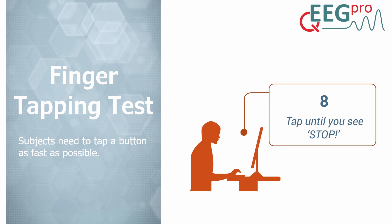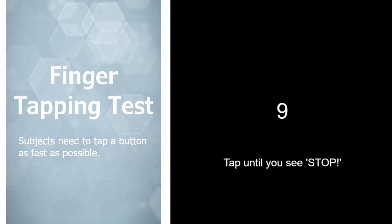The final test is the Finger Tapping Test. This is a very simple test in which subjects are instructed to tap a button as fast as they can with either their left or right hand for 10 seconds. The test consists of seven trials, where trial one is a practice trial. Trials two through four use the right hand and trials five through seven use the left hand. Impaired performance has been shown for patients suffering from motor dysfunctions as a result of TBI, Parkinson's disease, or stroke. During the demo, a countdown on screen counts down from 10 to 0, after which the subject is instructed to stop tapping.